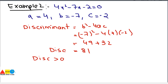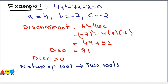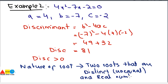The discriminant is greater than zero and it is also a perfect square — specifically the perfect square of 9. When the discriminant is greater than zero and is a perfect square, we get two roots that are distinct, real, and unequal.